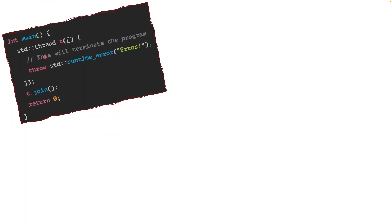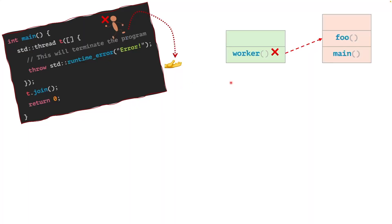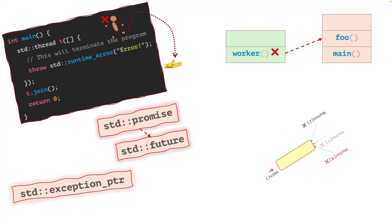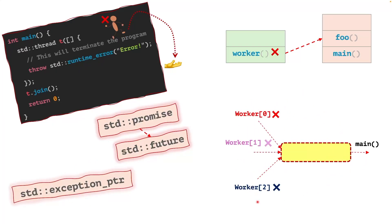In this video, I will show you how to properly handle exceptions in C++ threads, and what happens when a thread throws, and where and how we can catch it. In particular, I will discuss how we can transfer the exception from one thread's call stack all the way to another thread's call stack. We will use constructs such as std::promise, future, and something called exception pointer. Also, I will talk about a more advanced case where you have multiple threads, each of them can throw, and we want to transfer the exception from their call stack all the way to the main call stack. I will show you how we can do this with a shared message queue. And finally, I will discuss how we can use RAII in C++ to write safer multi-threaded programs.